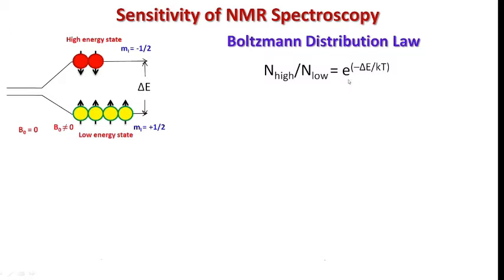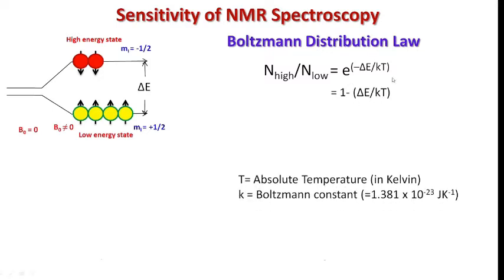In simplified form it can be written as 1 minus ΔE upon kT, where this k is the Boltzmann constant with the value 1.381 × 10⁻²³ joules per Kelvin and this T is the absolute temperature in Kelvin.